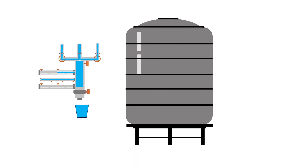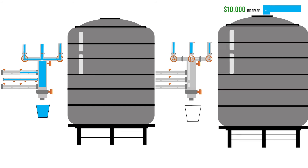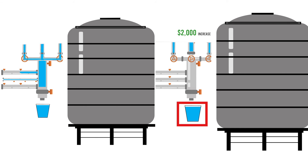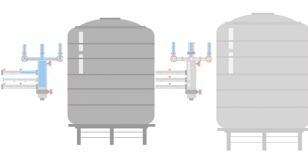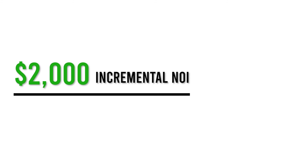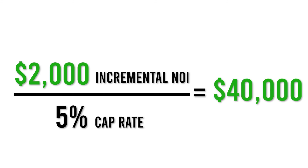Instead, let's say you add laundry in-unit for $10,000, and tenants are now willing to pay $2,000 more in rent per year, which mostly trickles straight down to the NOI. Assuming a 5 cap, you've just created $40,000 in value. If you're curious how I arrived at that: you take the incremental NOI you generated — the $2,000 in this case — and divide it by 5%. That gets you $40,000.